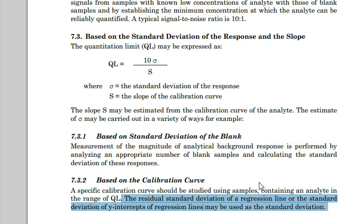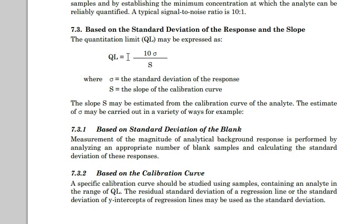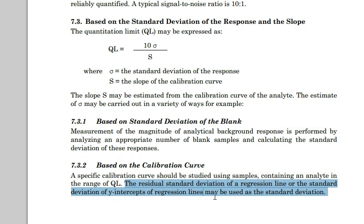The idea is to obtain that standard deviation of the response and use that for estimation of the LOD and the LOQ — the limit of detection and limit of quantitation. The ICH guideline suggests that LOD and LOQ could be determined by different ways. One way is by using the residual standard deviation of a regression line, or the standard deviation of the y-intercept. For example, for a quantitation limit, 10 times the standard deviation of the response divided by the slope will give you the estimated LOQ.